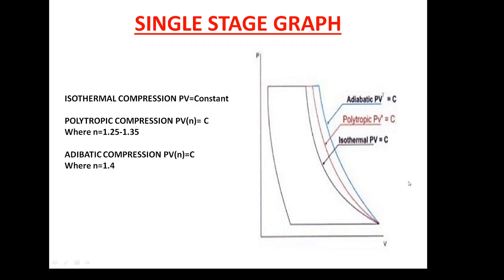I am going to explain all three. The first is isothermal compression. Isothermal compression is the compression in which, as we are compressing the gas, there will be no increase in temperature. For example, if the pressure is 1 bar and the gas is compressed to 5 bar, throughout the process from 1 bar to 5 bar there is no increase in temperature of the gas.